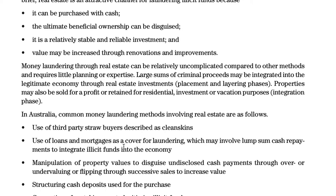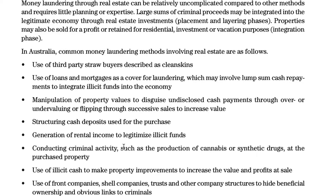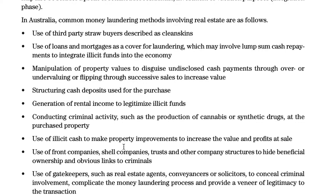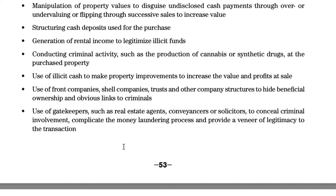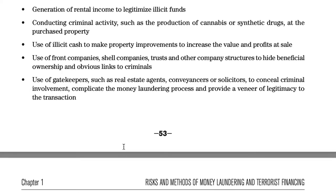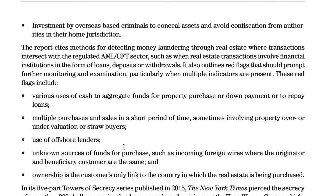Properties may also be sold for a profit or retained for residential, investment, or vacation purposes in the integration phase. In Australia, common money laundering methods involving real estate include: the use of third-party straw buyers described as 'clean skins'; use of loans and mortgages to cover laundering, which may involve lump-sum cash repayments; manipulation of property values to disguise undisclosed cash payments through over- or under-valuing or flipping homes; structuring cash deposits to purchase property; generation of rental income to legitimize illicit funds; conducting criminal activities such as production of cannabis or synthetic drugs at the purchased property; use of illicit cash to make property improvements; use of front companies, shell companies, trusts, and other structures to hide beneficial ownership; use of gatekeepers such as real estate agents, conveyancers, or solicitors to conceal criminal involvement; and investment by overseas-based criminals to conceal assets from authorities in their home jurisdiction.